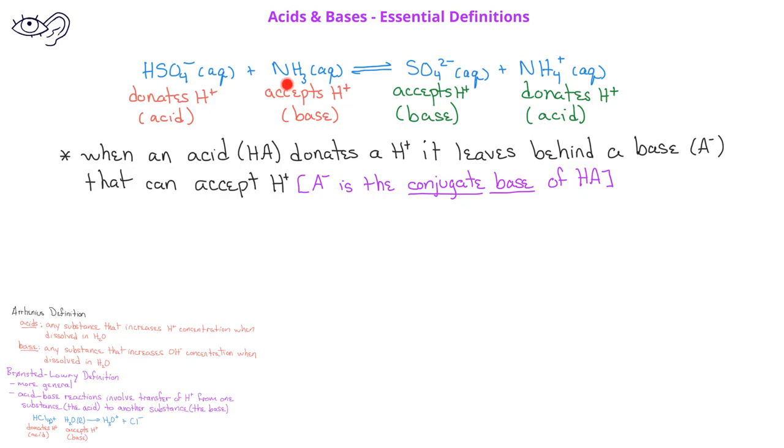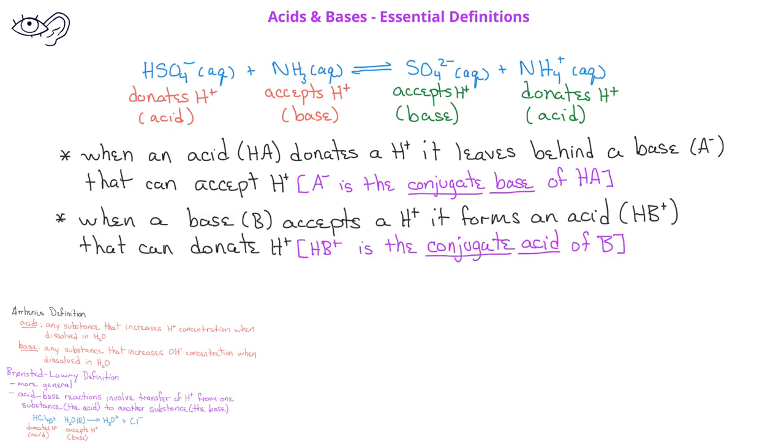On the other hand, when a base, such as NH3, accepts a hydrogen ion, it forms an acid. In this case, that acid is NH4+. That NH4+ that is formed can act as an acid by donating the hydrogen ion.